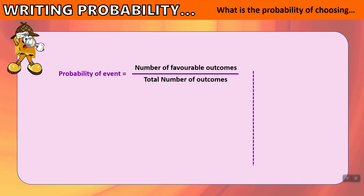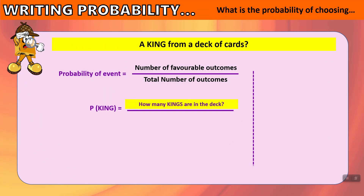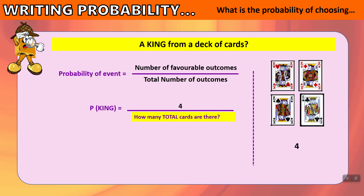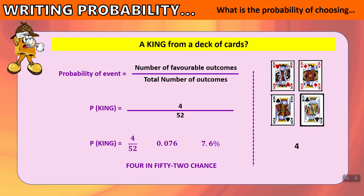What is the probability of choosing a king from a deck of cards? We write this as P(king). There are 4 kings in the deck — king of hearts, diamonds, spades, and clubs. The total number of cards is 52. So our answer is 4 out of 52, which as a decimal is 0.076 and as a percentage is 7.6% — a 4 in 52 chance of choosing a king.